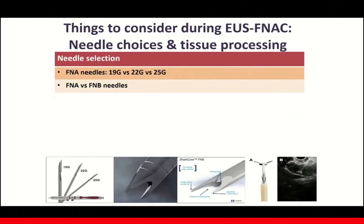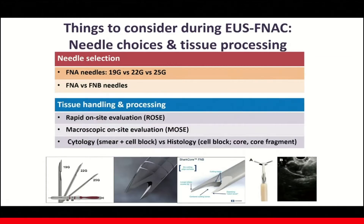Needle selection — we have different sizes of needles to choose from. Are they different? The aspiration versus biopsy needles — are these different? Finally, tissue processing, including ROSE, which is rapid on-site evaluation; MOSE, which is macroscopic on-site evaluation; and cytology and histology preparation.